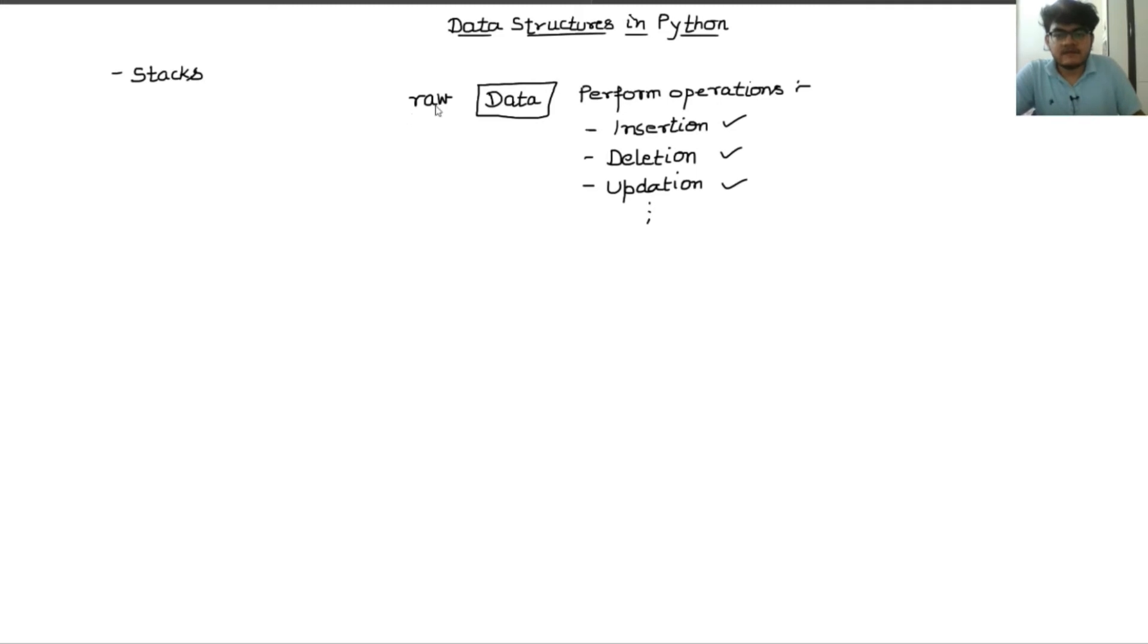If we talk about data, for example, suppose I have some numbers. You can see these numbers are just data. If I put these numbers in an array, something like this, I can push or insert some elements in this data structure. I can even try to update some values in this data structure. There are so many data structures available.